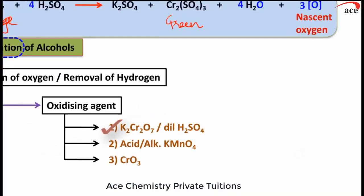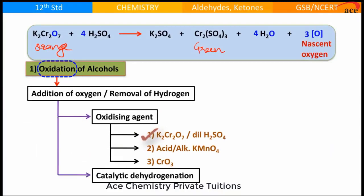We have one more method, what we called as catalytic dehydrogenation, that is copper at about 573 Kelvin.